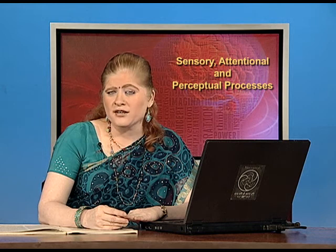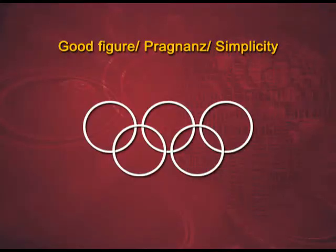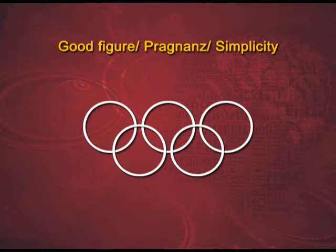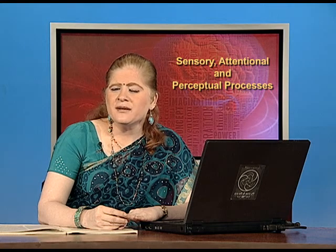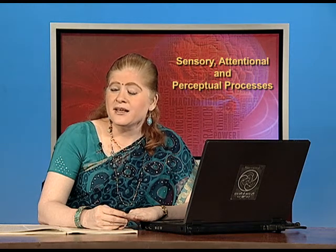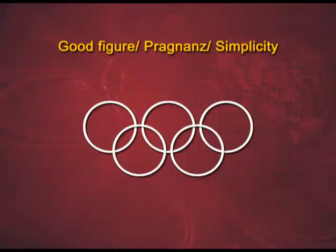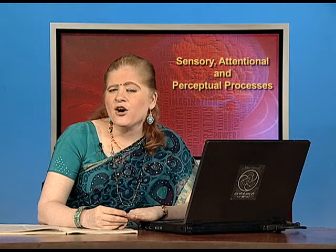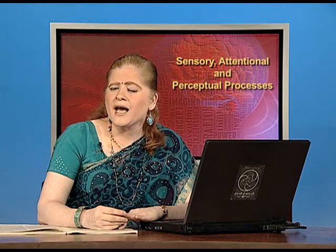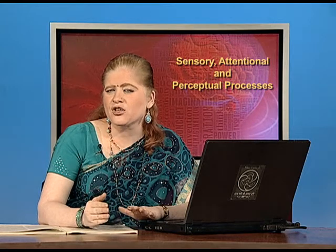Before we go to these laws, let us understand the concept of good figure, or the concept of pregnancy or simplicity, that our brain and cerebral system aim at. By default, our cerebral system wants to see things in pregnancy — that is, as simple as possible. This figure that you see on your screens you will perceive as five different circles rather than any other complex figures. Whenever we see any complex thing, we tend to perceive the most simple organization of these stimuli.